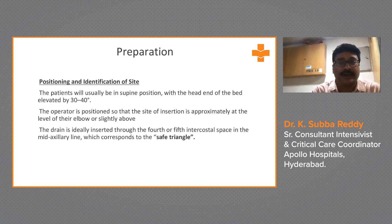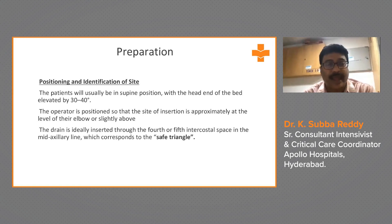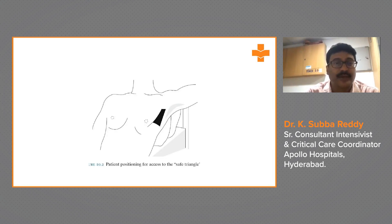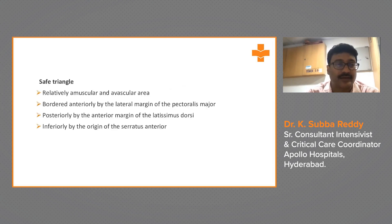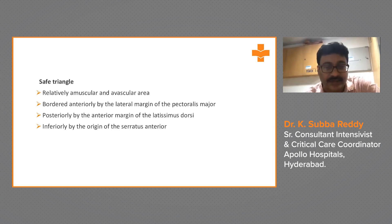Prepare the patient: position and identification of the site. The patient will usually be in a supine position with the head end of the bed elevated 30 to 40 degrees. The drain is inserted through the fourth or fifth intercostal space in the mid-axillary line, corresponding to the safe triangle. This triangle of safety is important — a common exam question. It is a relatively amuscular and avascular area, bordered anteriorly by the lateral margin of pectoralis major, posteriorly by the anterior margin of latissimus dorsi, and inferiorly by the origin of serratus anterior.